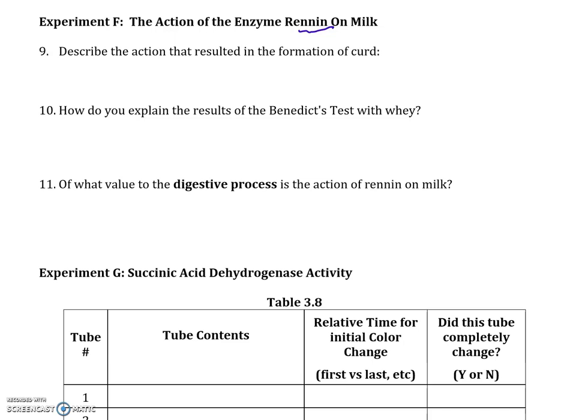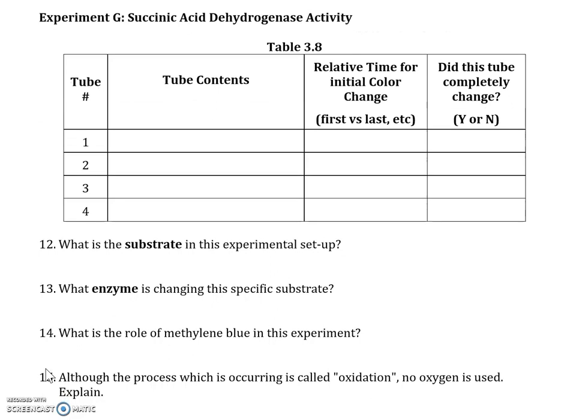The value of rennin to the digestive process is that it prepares the milk protein by curdling and partially denaturing it, making it easier for other proteases to act on it for further digestion and release of amino acids. Moving on to experiment G, the hamburger meat experiment — note that this experiment will not be tested on the next quiz; it will be combined with the bioenergetics lab for testing purposes.